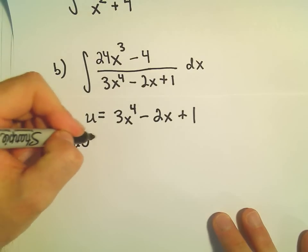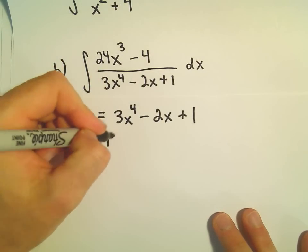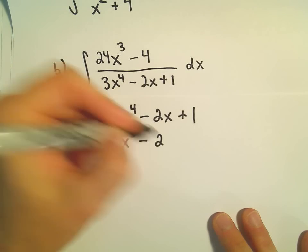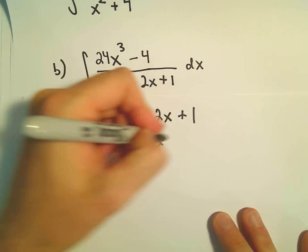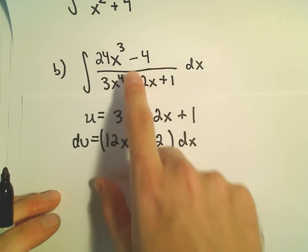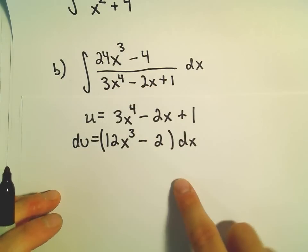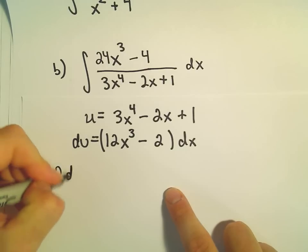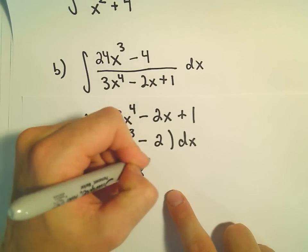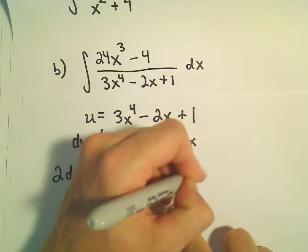So if we take our du, we would get 4 times 3, which would be 12, and then x to the third, and then minus 2, and then dx. Well, that's almost what we have in the numerator. We have 24x cubed minus 4. Well, if I just doubled both sides, so 2du, and if I multiply the right side by 2...